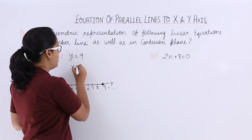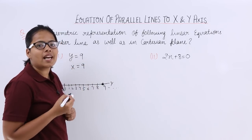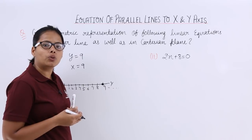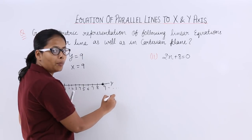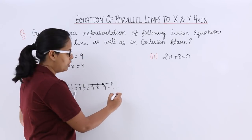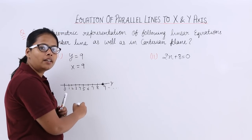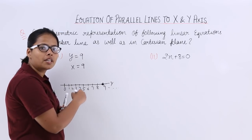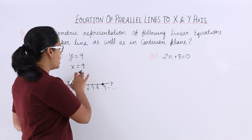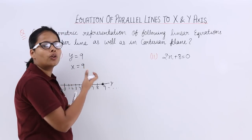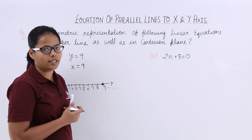If instead of y you have x is equal to 9, then what you will do is again plot a number line — that would be the x axis — and then again mark origin 1, 2, 3 up to 8. That's how you will locate the point x is equal to 9 on the x axis.